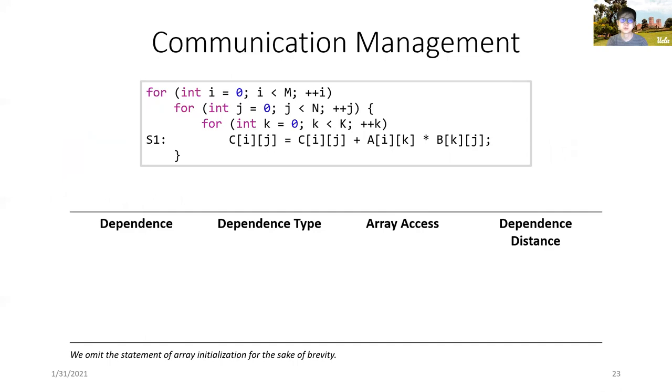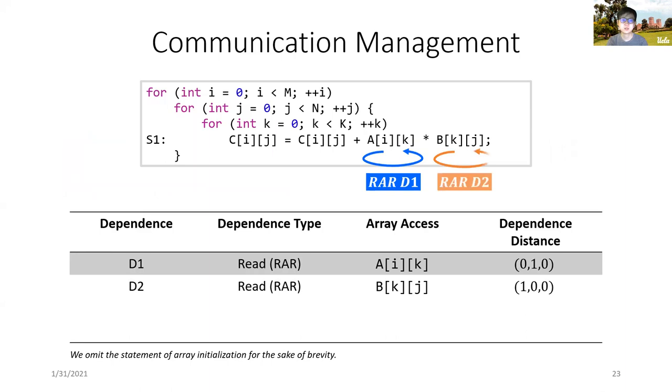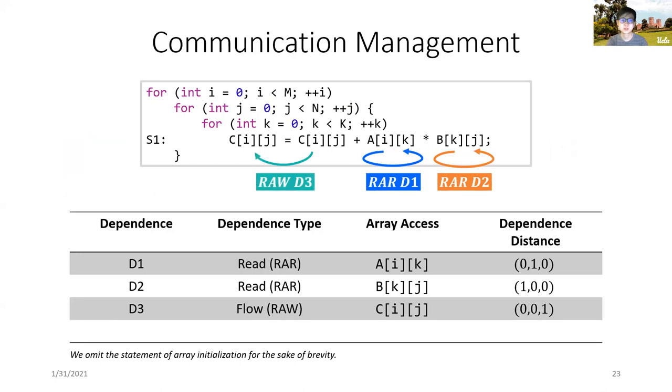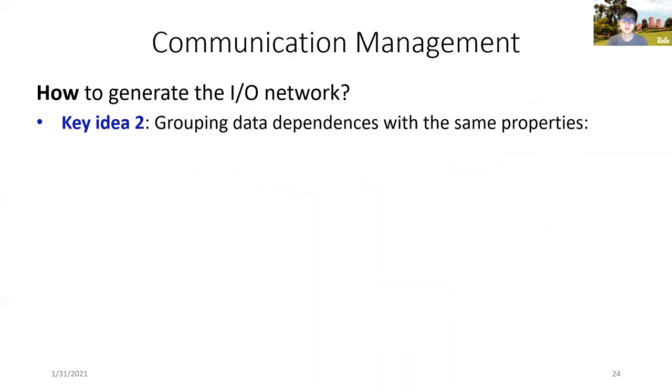As an example, for the matrix multiplication, we can extract four data dependencies from the program. The first one is the read dependence for reusing the array access of A[i][k]. The second one is the read dependence for reusing the array access of B[k][j]. The third one is the flow dependence for accumulating the intermediate results of C[i][j]. And the last one is the output dependency for collecting the final results of C[i][j].